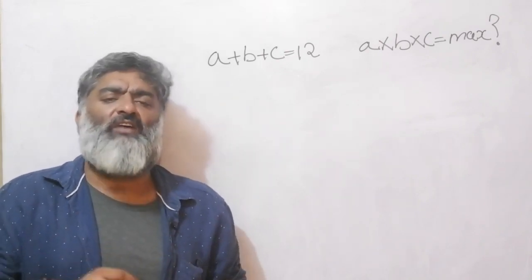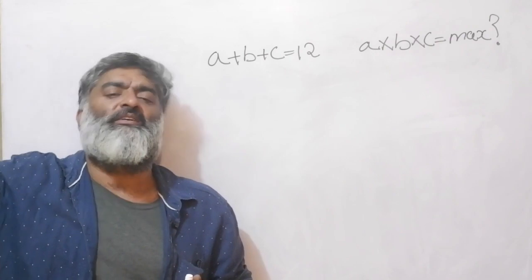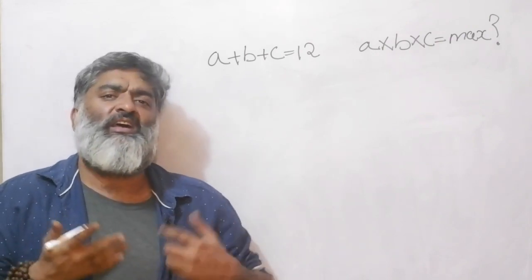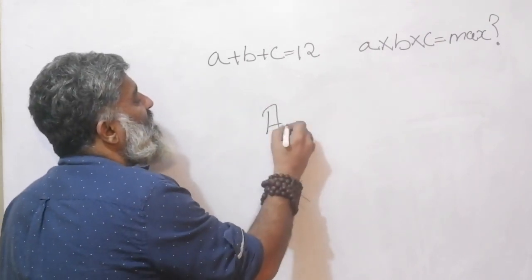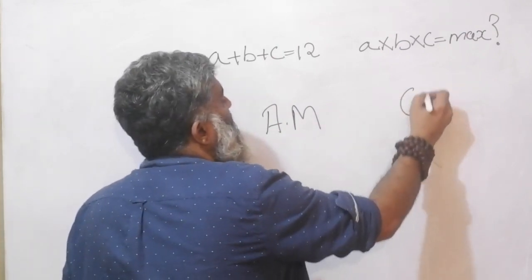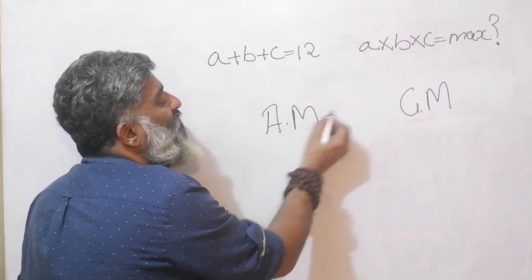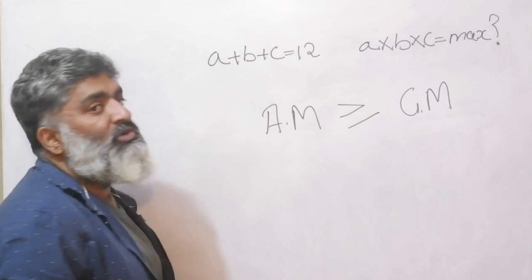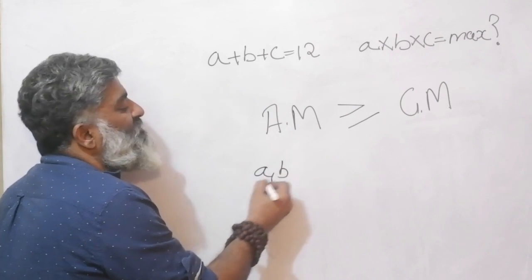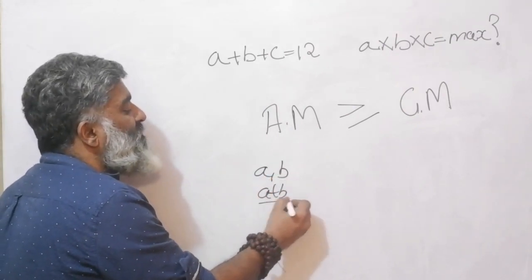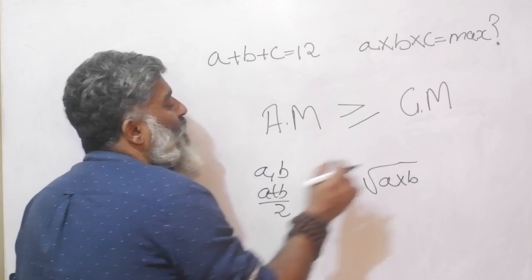We have already looked at maxima and minima with graphs and functions for quadratic equations, so we know what we mean — we want to go to the highest or lowest possible point. The concept we will use revolves around arithmetic mean (AM) and geometric mean (GM). For any set of terms, the arithmetic mean is greater than or equal to the geometric mean. For two terms a and b: the arithmetic mean is (a+b)/2 and the geometric mean is the square root of a times b.